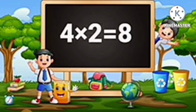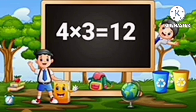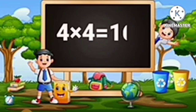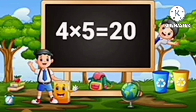Table of 4: 4 ones are 4, 4 twos are 8, 4 threes are 12, 4 fours are 16, 4 fives are 20.